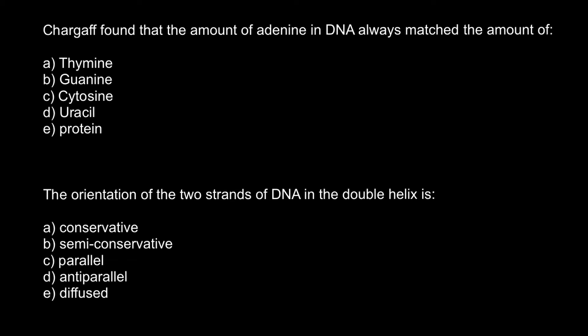Hello and welcome to Unikolai's genetics lessons. The first question is: Chargaff found that the amount of adenine in DNA always matches the amount of — and you have to choose the correct answer. Pay attention to the word 'matched.' He doesn't state that adenine base pairs with another base, but he found that whenever we have, say, 20% of adenine, we would also find 20% of thymine, and together these give us 40%.